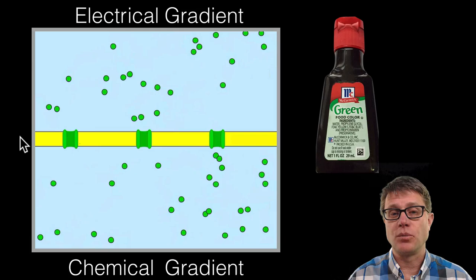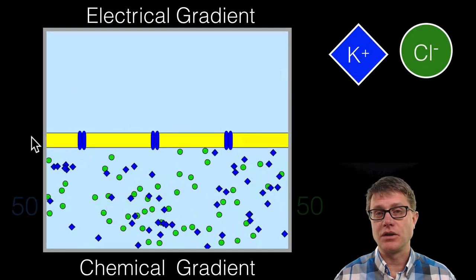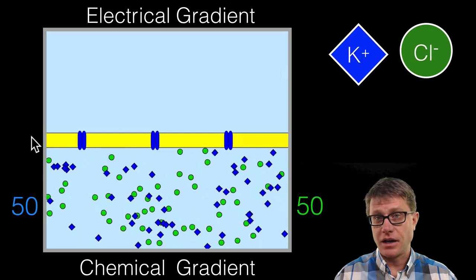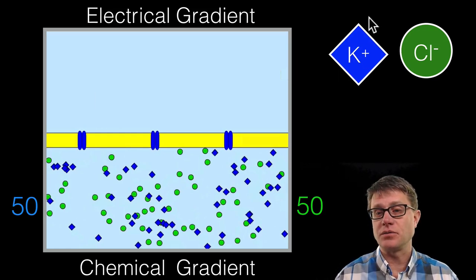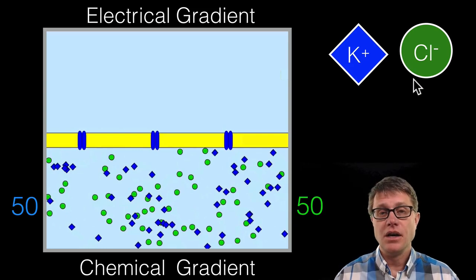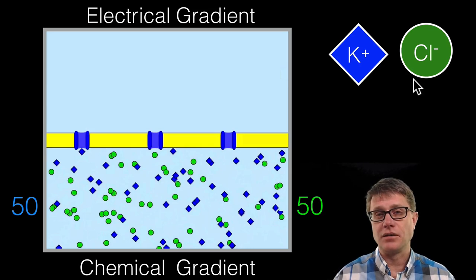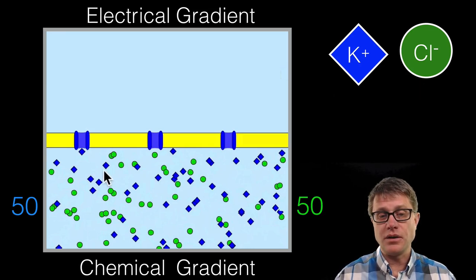But let us make this simulation a little bit more complex. Imagine I put some potassium chloride on the bottom and we dissolve it in water. So again, this is an ionic compound. It is breaking apart into its ions. We have got the potassium ions which have a positive charge and the chloride ions which have a negative charge. And I put 50 of each on the bottom. We start them moving. And now I am going to open up some channels that only allow potassium to move through.